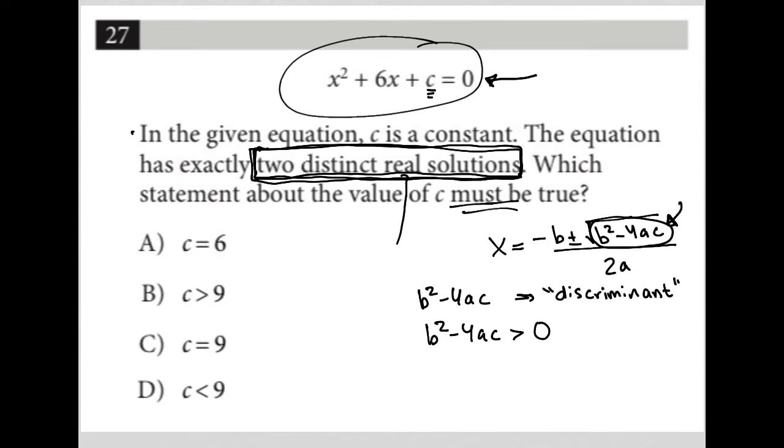So again, this is the key to knowing that this is exactly where we move forward with this. So B squared minus 4AC must be greater than 0.